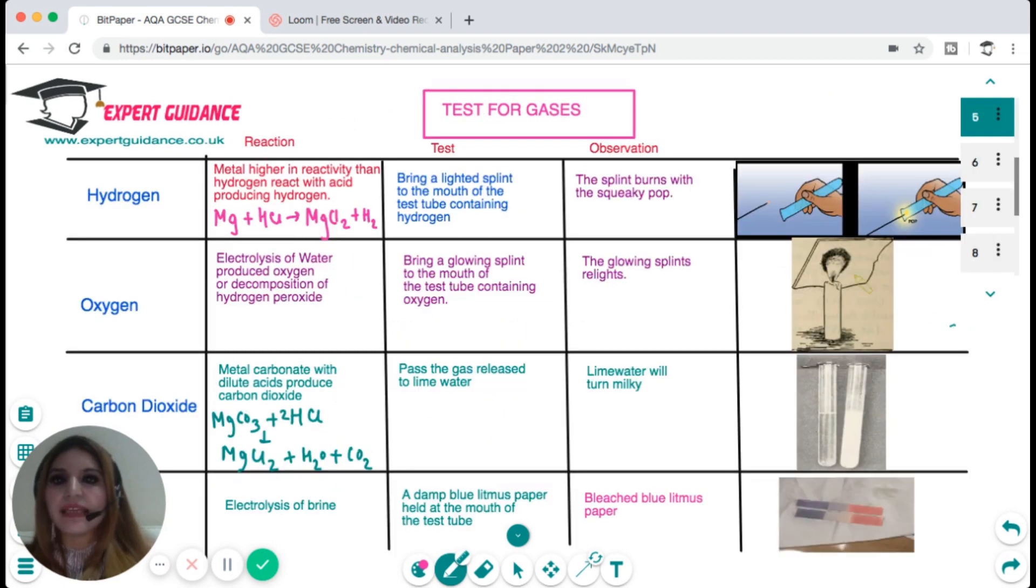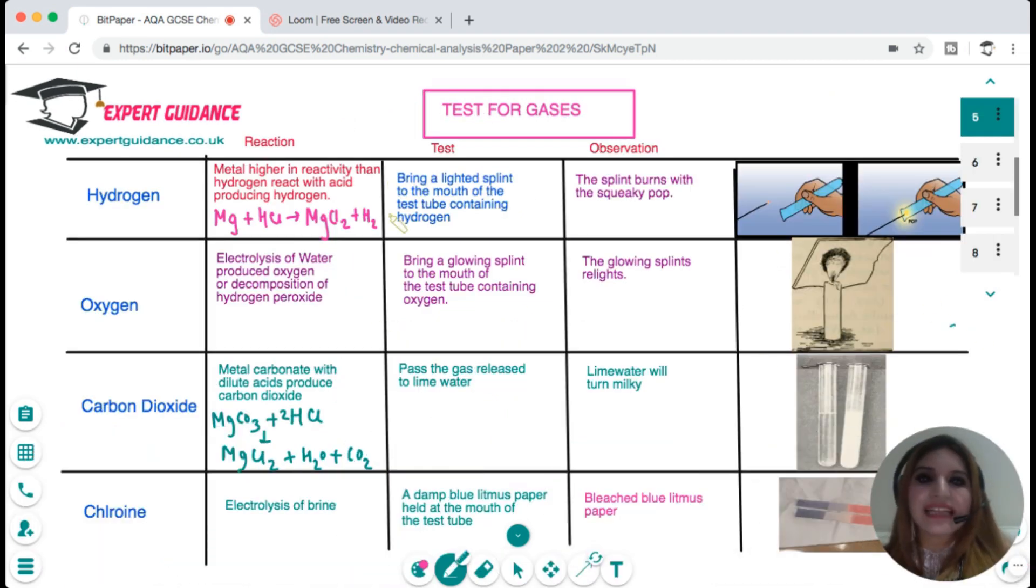Next is very important, the test for various gases. You should know the test for hydrogen, oxygen, carbon dioxide, and chlorine. Where is hydrogen produced? If you remember group 1 reactions, whenever any metal reacts with acid it forms a salt and hydrogen. How do we test for hydrogen? We bring a lighted splint at the mouth of the test tube and it burns with a pop sound. It's a squeaky pop test.